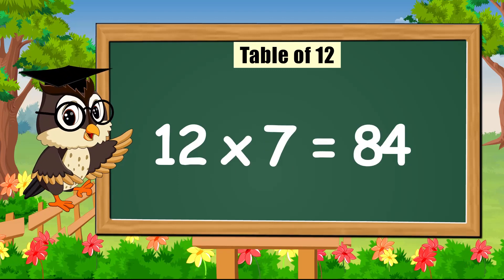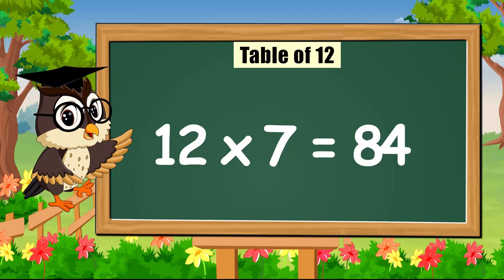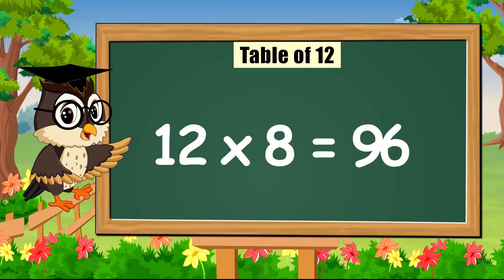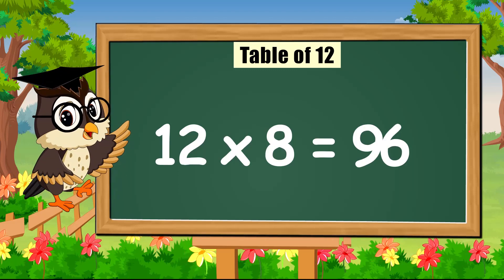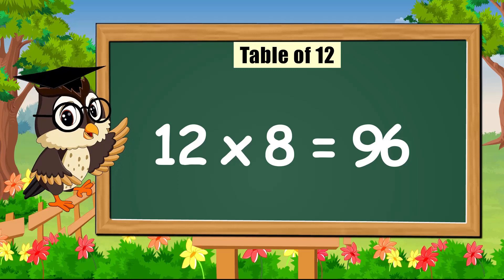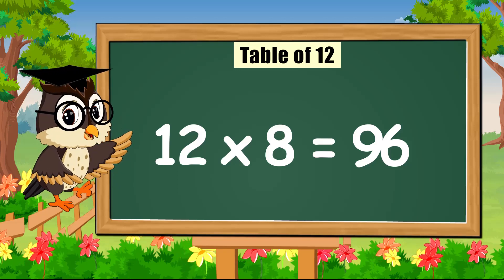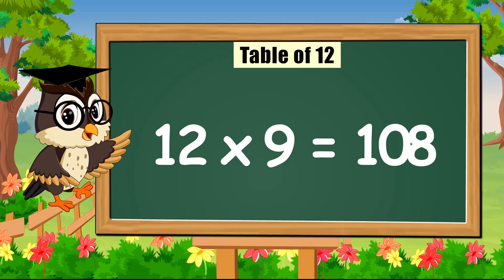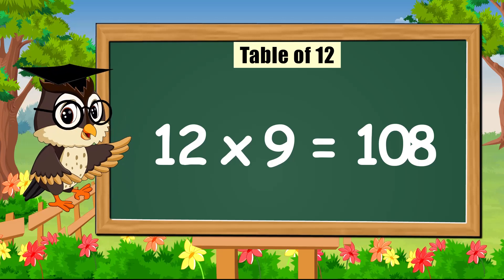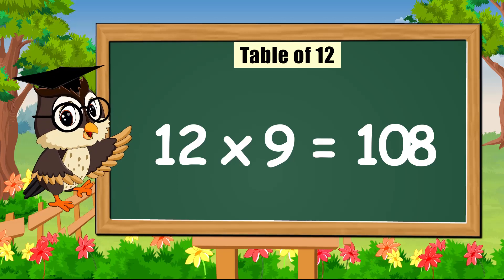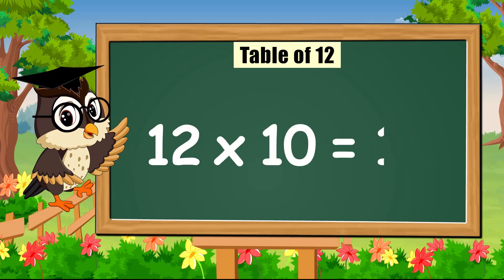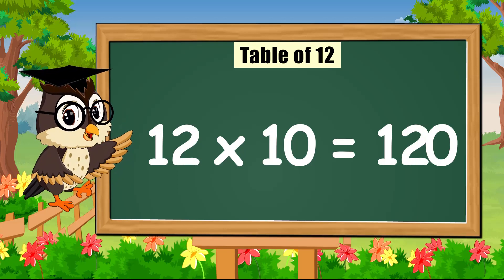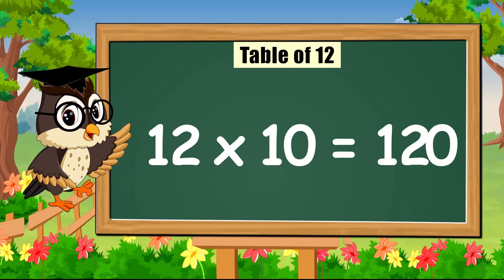Twelve times seven is eighty-four. Twelve times eight is ninety-six. Twelve times nine is a hundred and eight. Twelve times ten is a hundred and twenty.